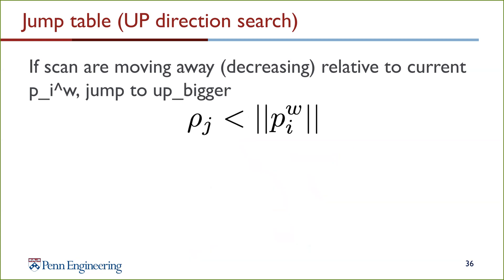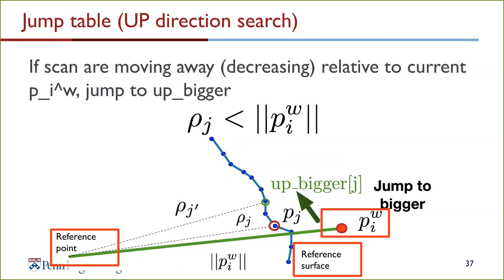Conversely, if the scans are decreasing relative to the current p_i^w, then the search should jump to the up-bigger index instead. The orientation of the reference point, reference surface, and p_i^w is as shown in the diagram, and therefore the best candidate that could possibly be a better match is the up-bigger point — any point in between will only have a greater distance.